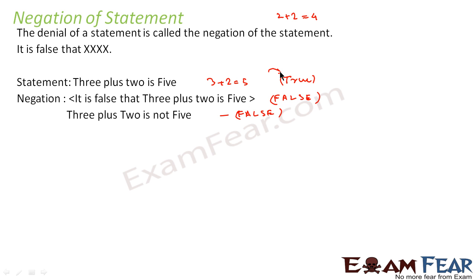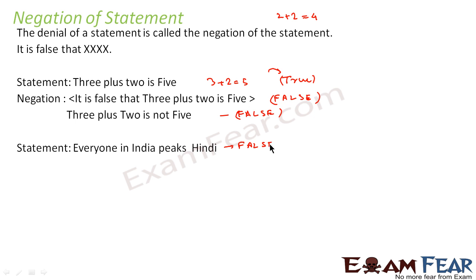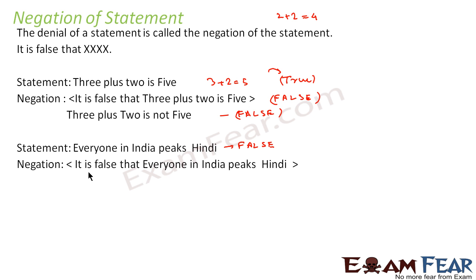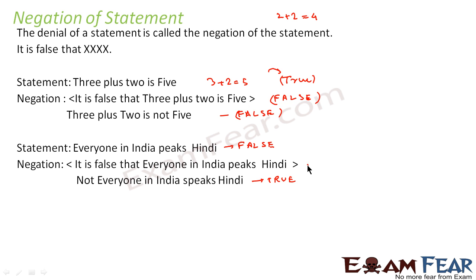Similarly, if the original statement is false, the negation of that statement will be true. For example, 'everyone in India speaks Hindi' — this is a false statement, because there may be people in India who don't speak Hindi. The negation is: 'it is false that everyone in India speaks Hindi', or 'not everyone in India speaks Hindi'. This negation is a true statement. So the original false statement became true upon negation.